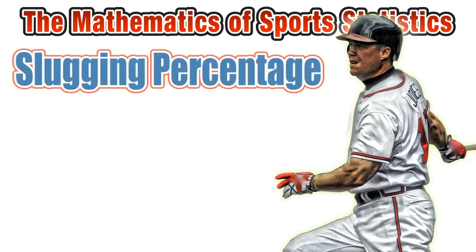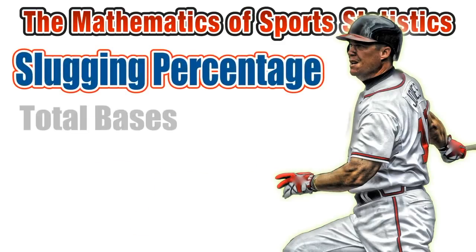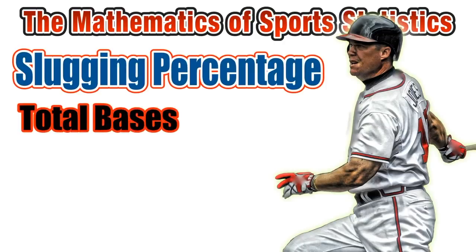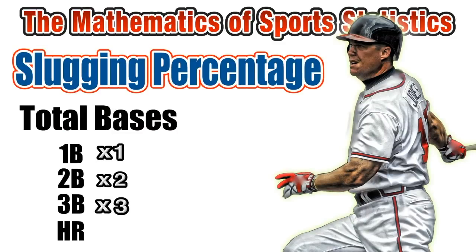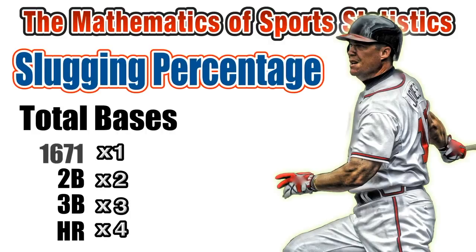Now we're ready to calculate Chipper Jones's career slugging percentage. First we need the number of total bases from his entire career. To do that, we take the total number of singles and multiply by one, doubles by two, triples by three, and home runs by four. So we're taking 1671 singles...